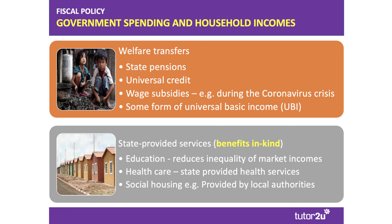It's also important to consider the impact of state spending on benefits in kind. For example, state education provided largely free at the point of use — access to good education in the state sector can be quite important in reducing the inequality of market outcomes. Healthcare provided on the basis of clinical need and not on the basis of willingness to pay is a very important benefit in kind for many millions of people in the UK. Likewise, subsidised social housing provision can help bring down the cost of rented property and provide essential shelter for those without economic resources. So government can have a direct effect on people's incomes through welfare spending, but also a benefit in kind effect through education, healthcare, and housing.